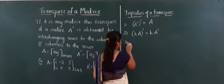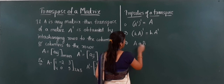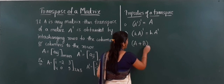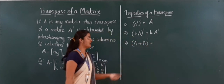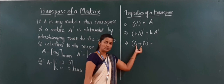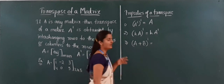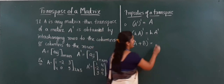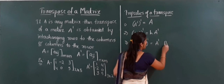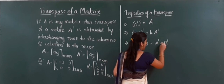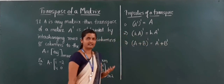The third property: A plus B, whole transpose. After adding two matrices and applying the transpose, the answer will be the same as if we first apply the transpose to each matrix individually and then add. That is, (A + B)' = A' + B'.